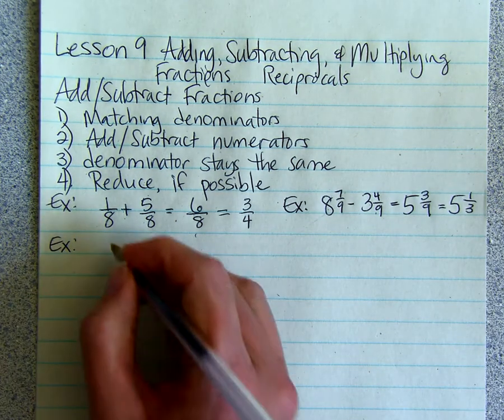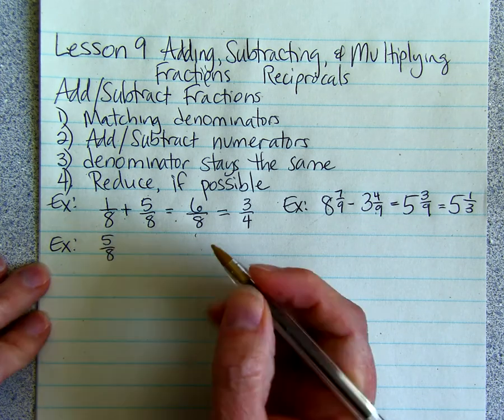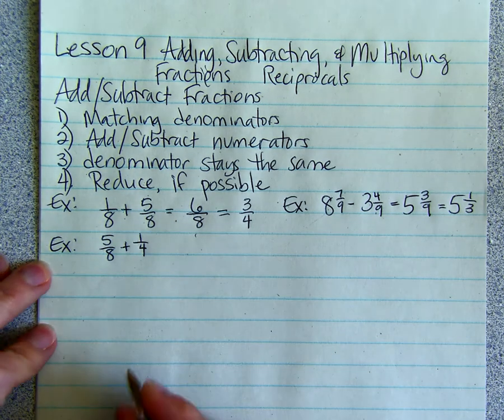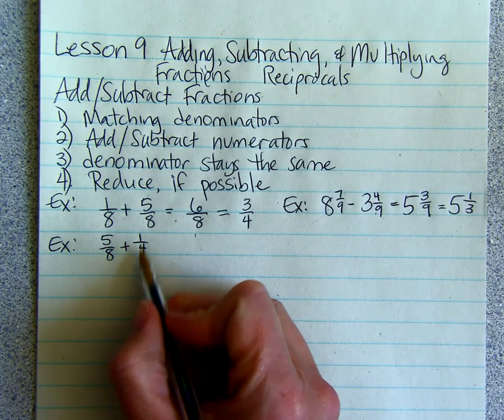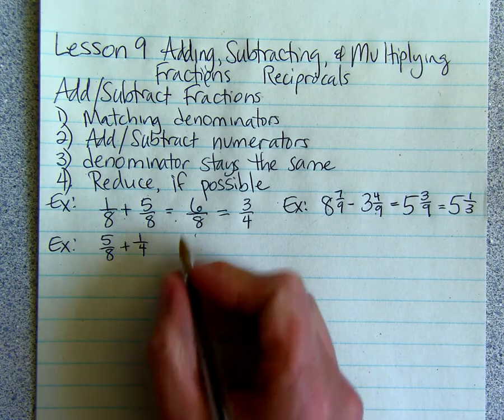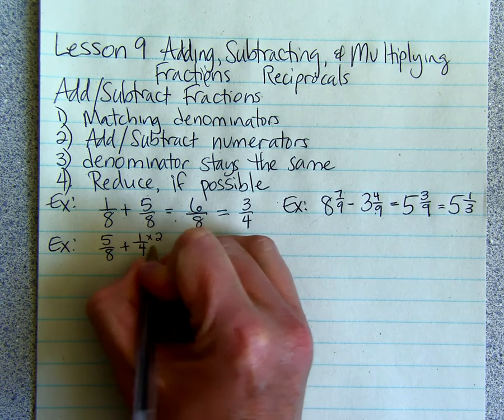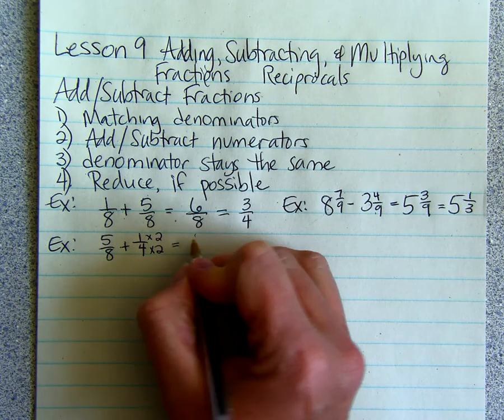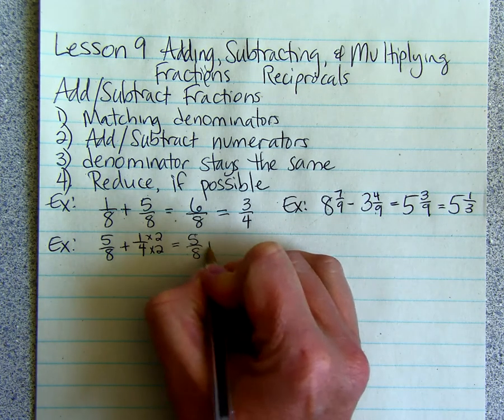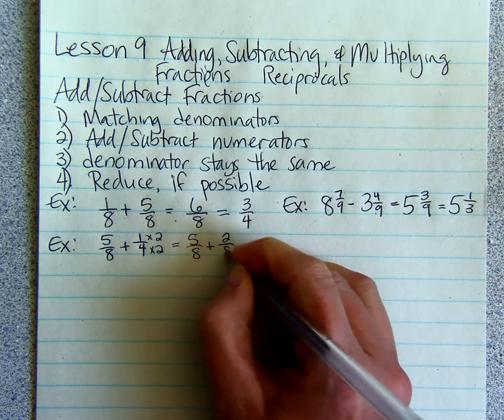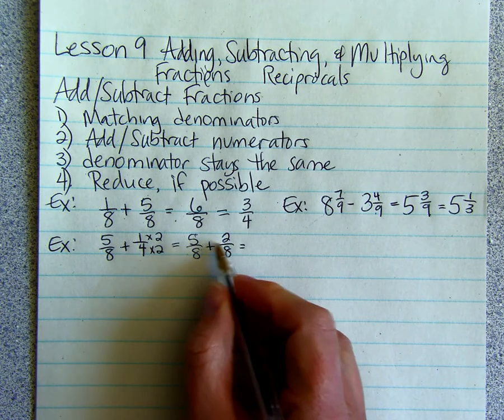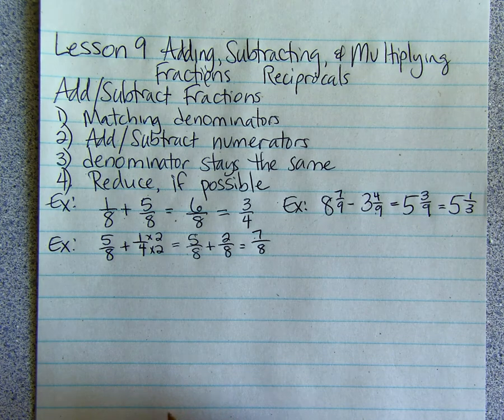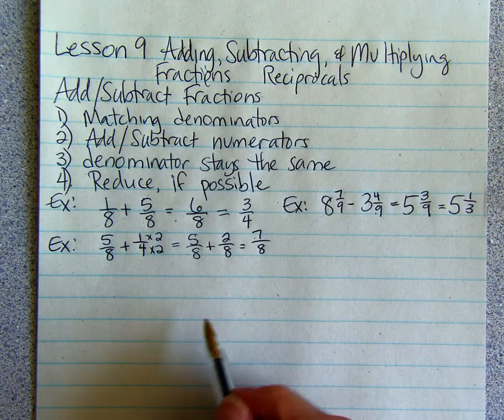And one more example. 5 eighths plus 1 fourth. Well, we have to have matching denominators. So let's change the 1 fourth by multiplying the numerator and the denominator by 2, so that we have 5 eighths plus 2 eighths. We'll add the numerators. 5 plus 2 is 7. The denominator stays the same, and we can't reduce. So 7 eighths is the answer to that one.